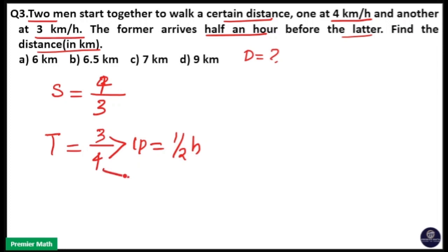That means 4 parts will be 4 into 1 by 2, is equal to 2 hours. So distance is equal to - if you take 4 parts, you have to take speed as 3 km per hour. So 3 km per hour into 2 hours is 6 km.